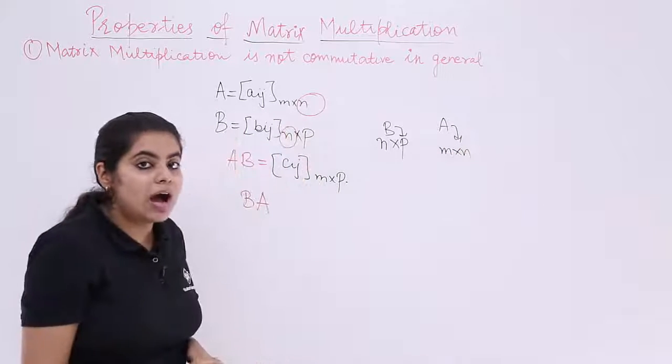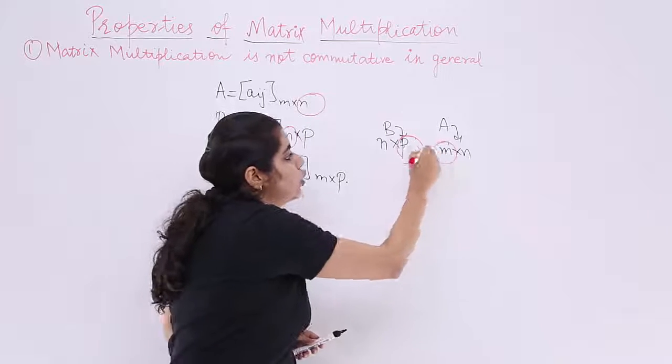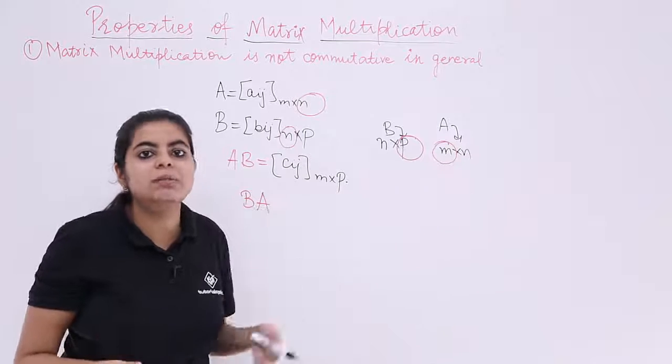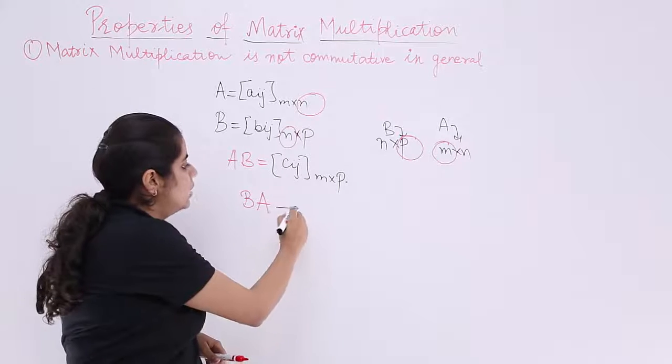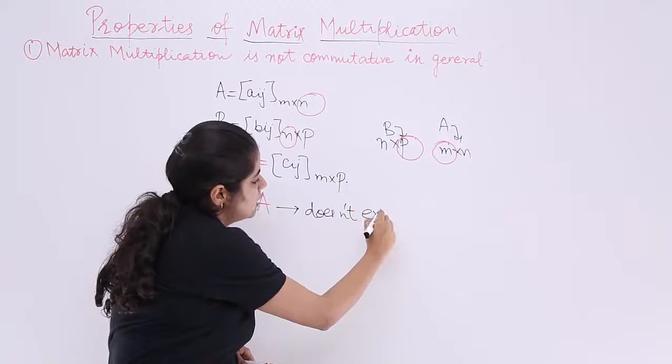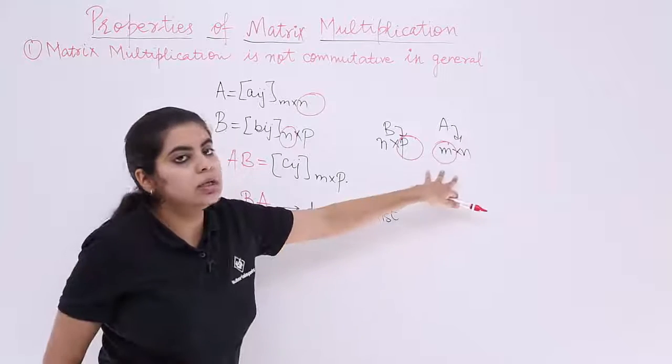Now are the columns of pre-multiplier equal to the rows of post-multiplier? P is not equal to M, so that means what? That means BA here does not exist. Doesn't exist. I will be writing this because actually it does not exist, reason being the values are not equal.